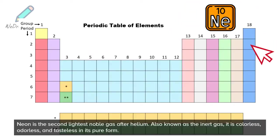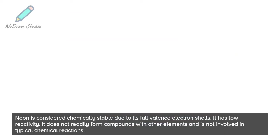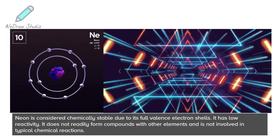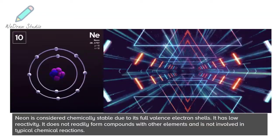Neon is the second lightest noble gas after helium. Also known as the inert gas, it is colorless, odorless, and tasteless in its pure form. Neon is considered chemically stable due to its full valence electron shells. It has low reactivity and does not readily form compounds with other elements.